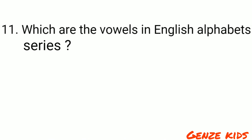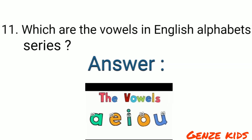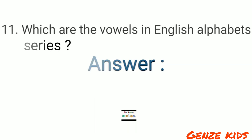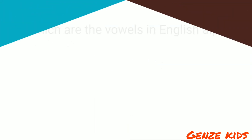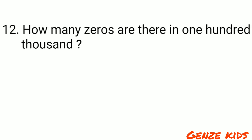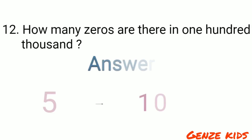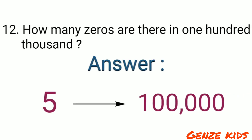What are the vowels in the English alphabet series? The vowels are A, E, I, O, U. How many zeros are there in 100,000? Five zeros.